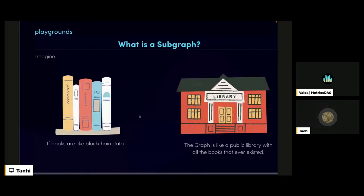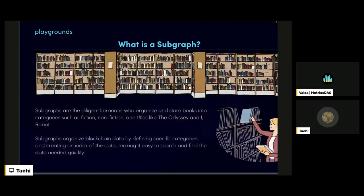So what exactly is a subgraph? I like to think in analogies. If you consider a book as blockchain data and the Graph network as a public open library where all books that have ever existed and will ever exist are stored, then a subgraph is simply a librarian that organizes and stores those books into categories — like fiction or nonfiction — and titles like the Odyssey and iRobot. A subgraph's job is to organize blockchain data by defining specific categories and creating indexes, so it's easy to search and find the data you need.